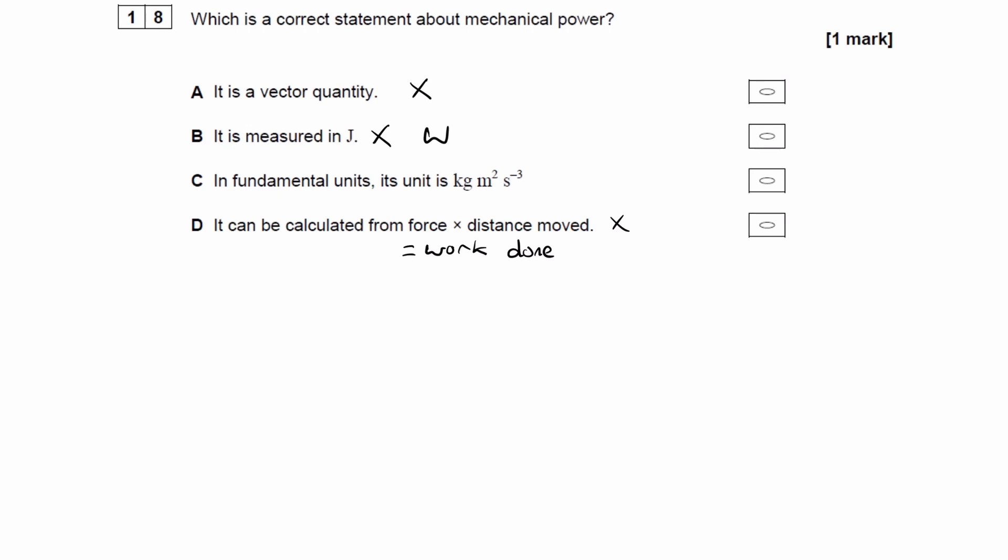So let's actually derive the fundamental units for power. So power is work done over time. Work done is equal to force times distance. Force is equal to mass times acceleration.